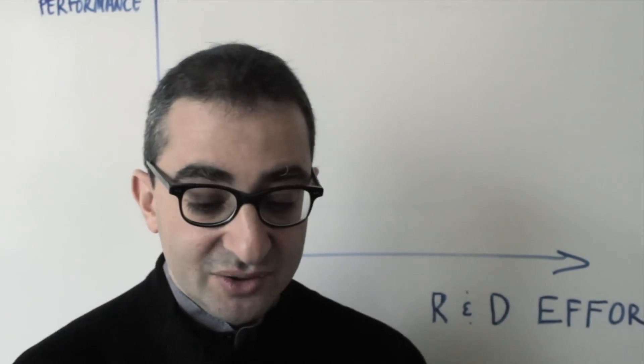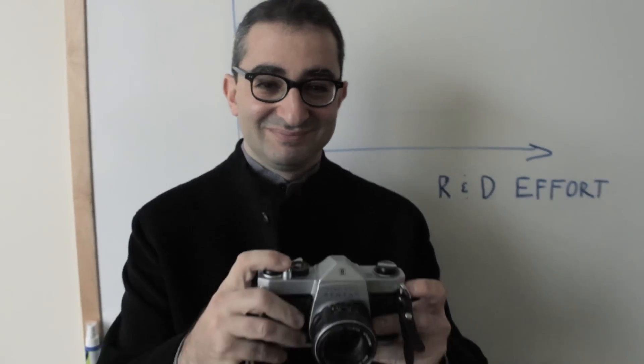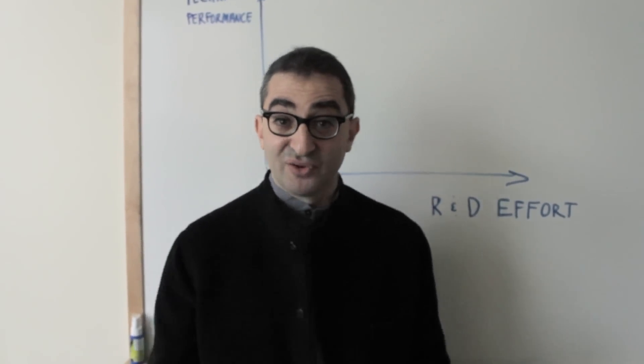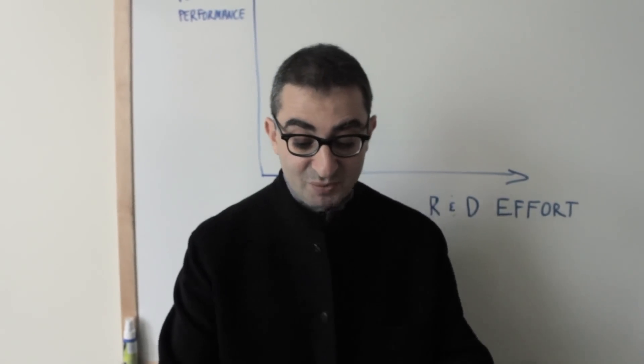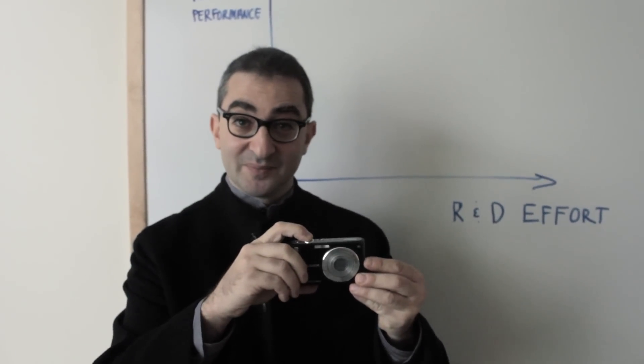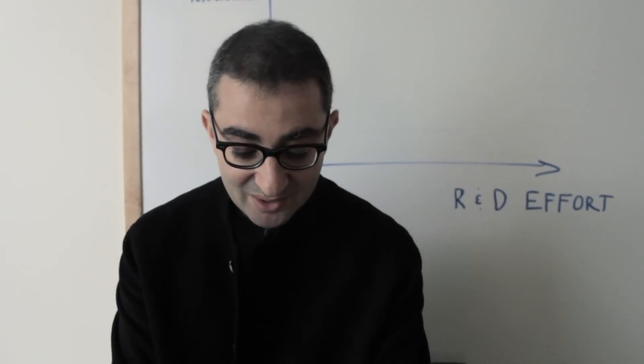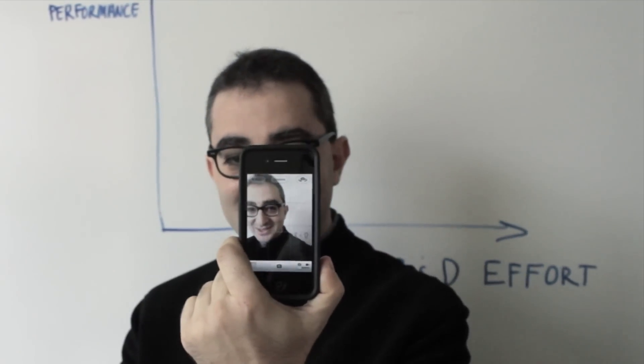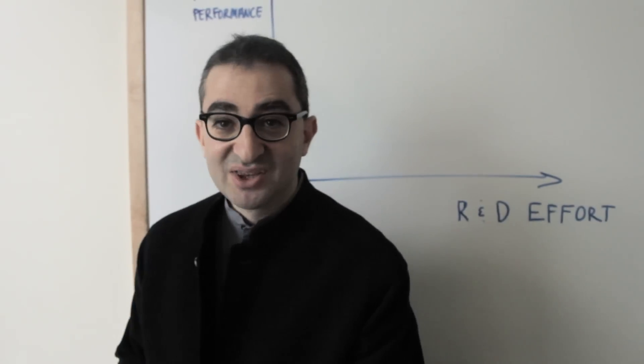So this is what cameras used to look like, right? But we all know that they've evolved a great deal. Now they're much more likely to look something like this, okay? Or even maybe something like this. Now how do we think about that?